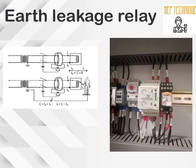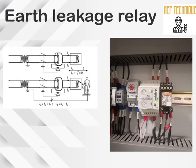The ELR consists of a core balance CT mounted at the source end. Any time a human comes in contact with any part of the line, a portion of the current will flow through the body. This will result in an imbalance in the current entering and returning to the CBCT of the ELR. When the fault current flows through the human body, the relay is triggered by the unbalanced quantity and the ELR is immediately tripped. That is how an ELR works.